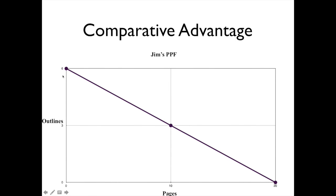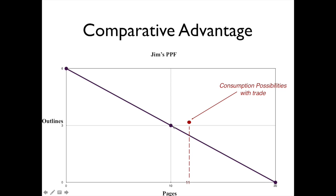This represents Jim's PPF without trade: if he spent all his time making outlines he can make six, all his time making pages he can make 20, and splitting his time he can make three and 10. But with trade, Jim was actually able to consume three outlines and 11 pages — he gets one additional page more than he would have if he didn't engage in trade.